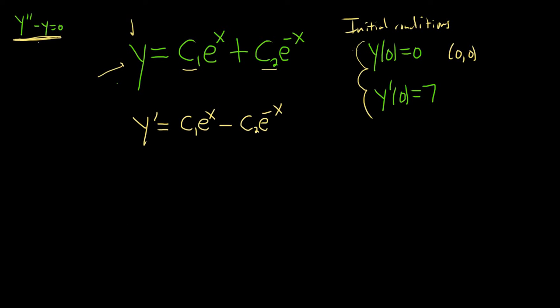Okay, now all we have to do is use our initial conditions. Let's use the first condition first. So we have to use it on y. So y of 0 is equal to c1 e to the 0 plus c2 e to the 0, negative 0. And that's equal to 0. So we have c1 plus c2 equal to 0, because e to the 0 is 1.